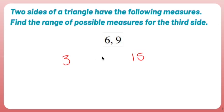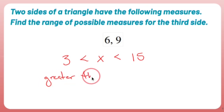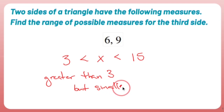And your third side, which we'll call x, has to be in between them. It can't be equal to either — it has to be in between. So we can say x is greater than three, but smaller than 15.